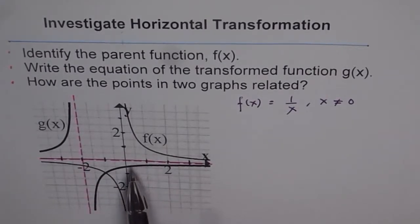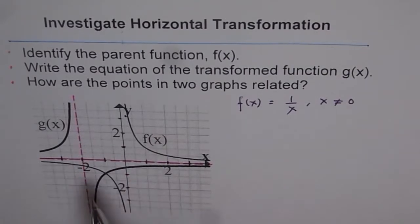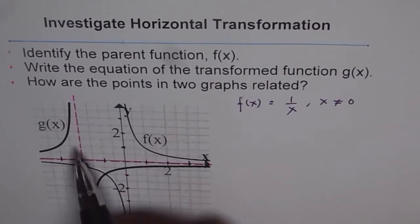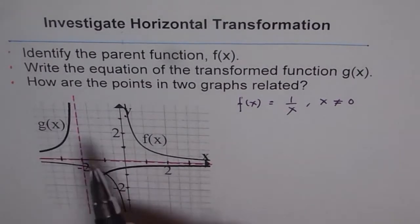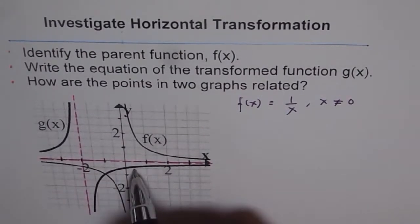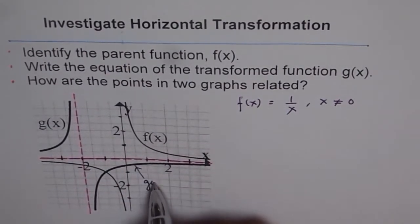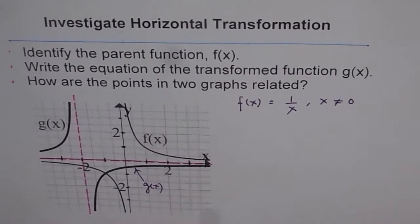You also notice that we have a horizontal asymptote which is y equals to 0, so y is also all real numbers but not equal to 0. The transformed function is the one in bold, g(x), so this is g(x) for us. That is the transform function part.